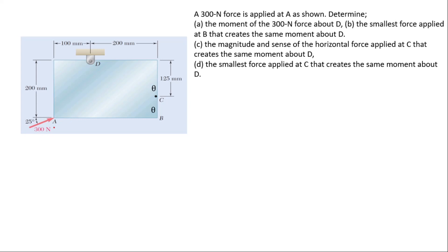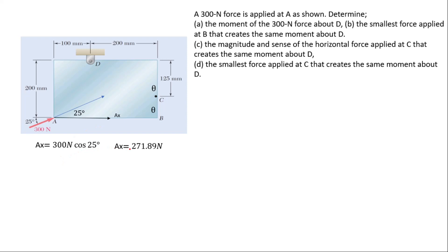To approach this question, we start by resolving the 300 newton force. We draw the force using the principle of transmissibility. The angle will be vertically opposite, so it will also be 25 degrees. Resolving in the x-component: Ax = 300 newton × cos 25°, which gives us 271.89 newtons.